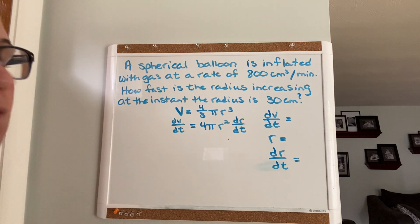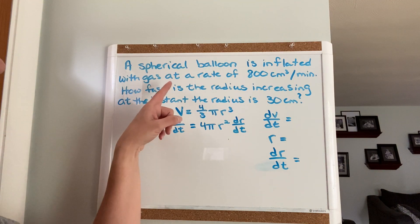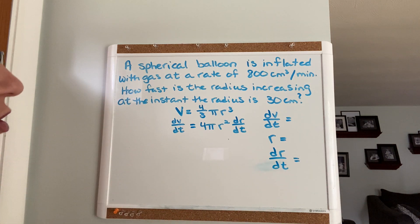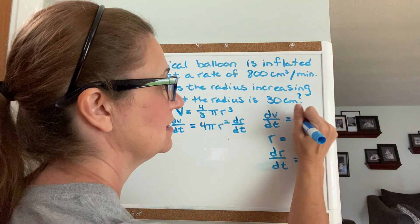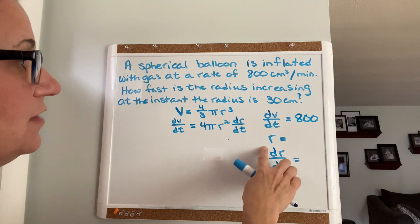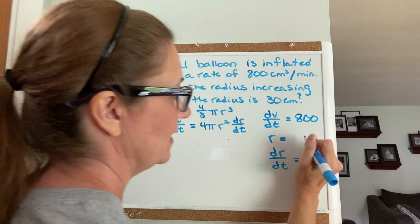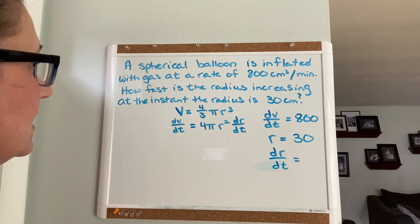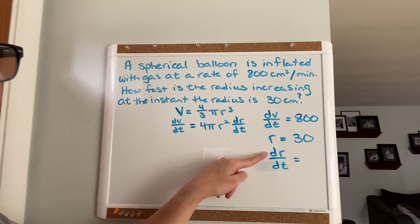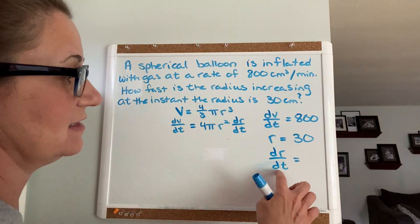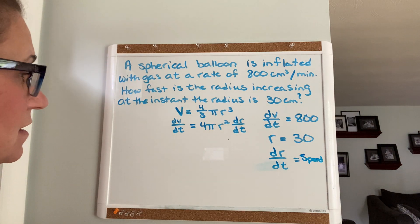So let's figure out what we know and what we're solving for. It says a spherical balloon is being inflated, so the rate of change of the volume is 800. So dV/dt, the rate of change of the volume with respect to time, that's 800. The radius - it says what's the speed of the radius when it's exactly 30? So the radius is 30 centimeters. And it says how fast is the radius changing? So dr/dt, the rate of change of the radius with respect to time - that's the speed of your radius, that's what you're solving for. Your job is to get dr/dt all by itself on one side.